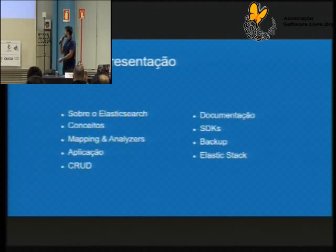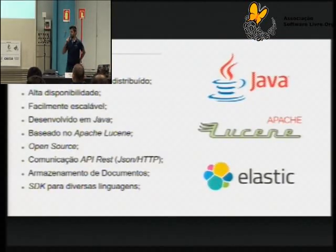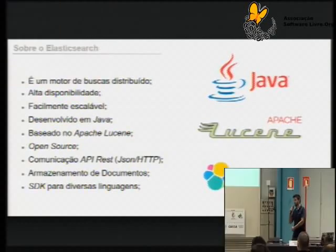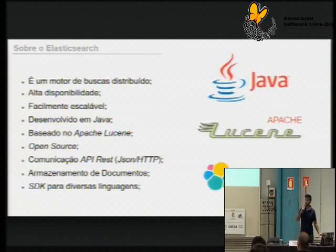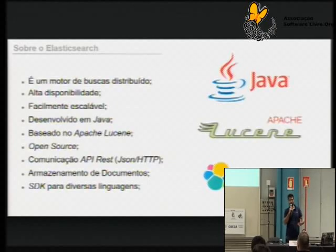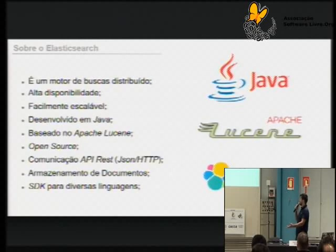Aqui está um pouquinho do que a gente vai estar falando hoje. Basicamente, o Elasticsearch, como eu havia falado, é um motor de busca. Já foi projetado desde o início para ser uma tecnologia de processamento distribuído, e também para estar provendo seu serviço em alta disponibilidade. Ele foi desenvolvido em Java, é baseado no Lucene. O Lucene provê toda essa força que o Elasticsearch tem, só que ele é muito baixo nível para você operar no dia a dia. O que o Elasticsearch fez, além de prover toda a infraestrutura para funcionar de forma distribuída, ser facilmente escalável, ele criou uma camada, uma API REST na frente, onde você consegue interagir muito facilmente com o motor de busca. E ele é open source. A comunicação é basicamente JSON sobre HTTP.